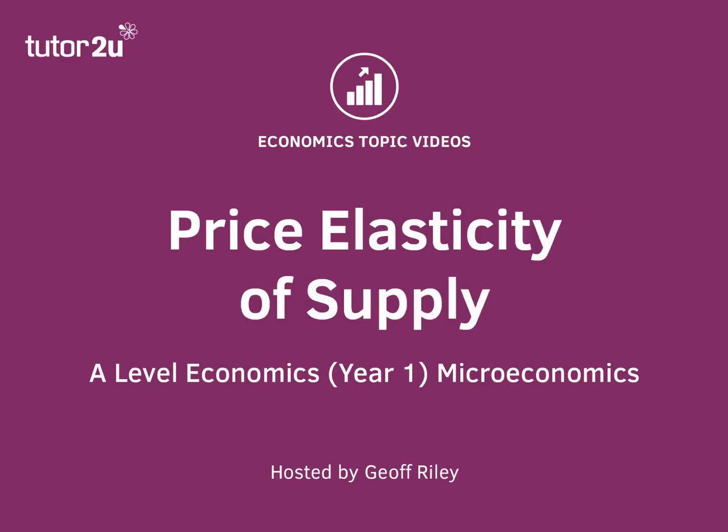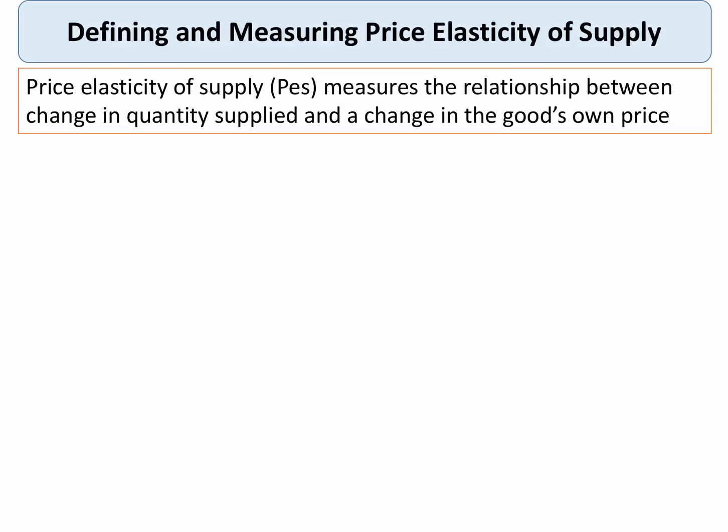Hi there, welcome to a revision video which this time is going to focus on price elasticity of supply. So what does elasticity of supply mean and how do we measure it? Well, price elasticity of supply measures the responsiveness of a change in quantity supplied to a change in the good's own price. As with all types of elasticity, it's essentially a measure of responsiveness — can producers increase their production, for example, when there's an increase in demand?